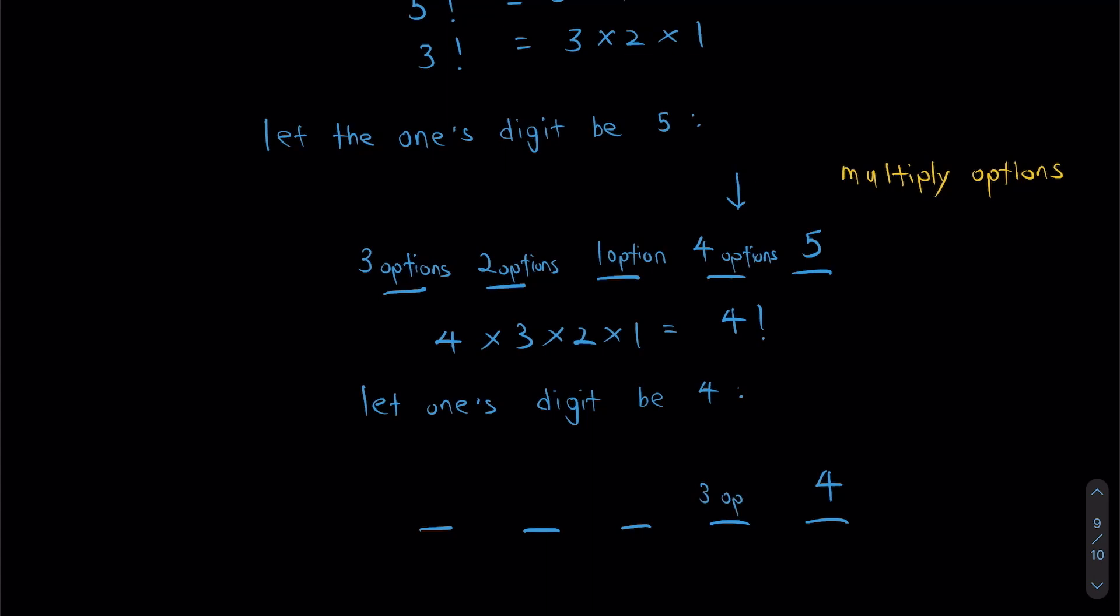and my tens digit has to be less than my ones digit, how many options can I have? I can only have three options for my tens digit now. And similarly I'm going to fill in the rest of the blank. I have three numbers left, so three